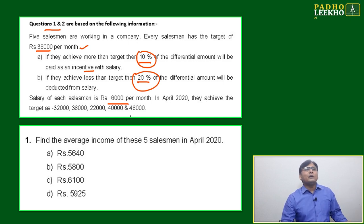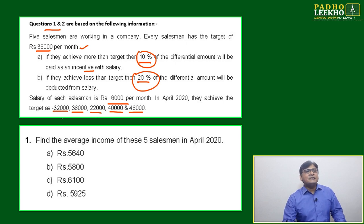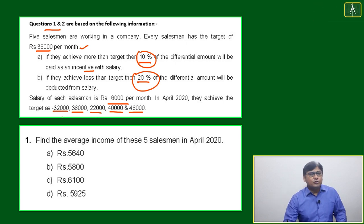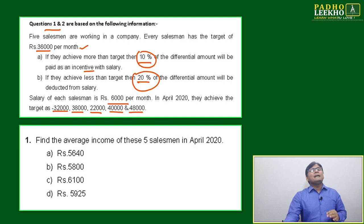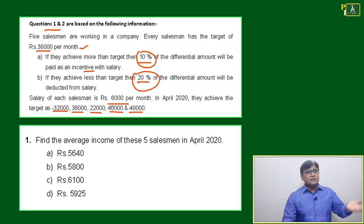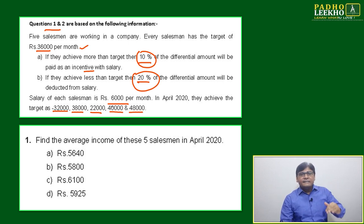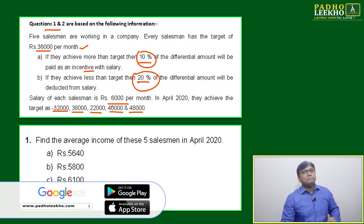In April 2020, the five salesmen achieved targets of 32,000, 38,000, 22,000, 40,000, and 48,000 respectively. The base salary of every salesman is 6,000. If they achieved more than 36,000, they get 10% of the differential as incentive; if they achieved less than the target, 20% of the differential amount will be deducted as a penalty.